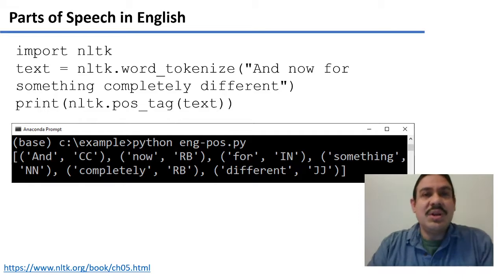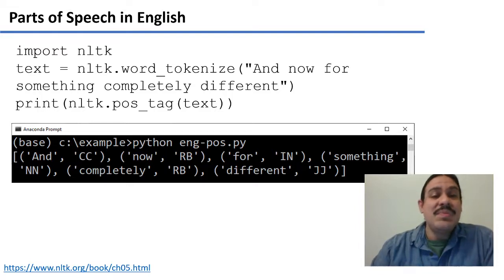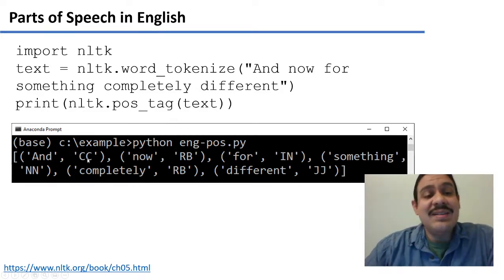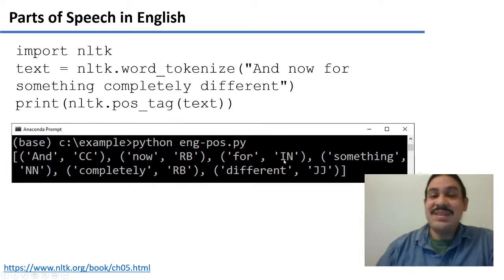This is an example from the NLTK documentation. There's many packages in Python that can give you part of speech but this is a very simple example. You take a sentence like and now for something completely different and you tokenize it. Then you send the array of tokens to the variable text. Then you take this array of tokens and run it through the function part of speech tag, POS tag of the package NLTK. When you print the results, you're going to get this. A list of tuples where the first element is the word and now for something completely different. And the second word is going to be a tag like CC, RB, IN and so forth.